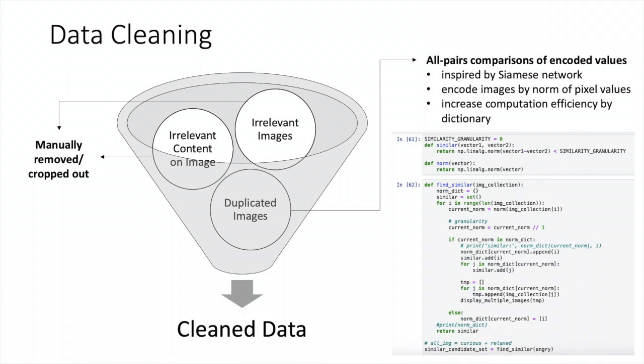Here's how we clean the data. First, we manually remove the irrelevant images and irrelevant contents on these images. Then, inspired by Siamese network, we encode all the images by the norm of their pixel values, and conduct an all-pairs comparison of these encoded values using the training, to detect duplicated images. Once duplicated images are detected, we manually remove them.